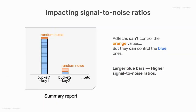It's important to remember that ad techs can't control the orange values, which in this case would be the random noise, but they can control the blue values, which is the true value that they are tracking. The larger the blue bars, the higher the signal-to-noise ratios.